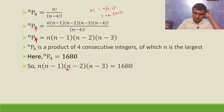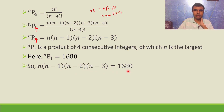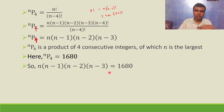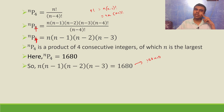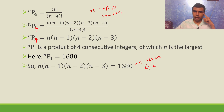So n into n minus 1 into n minus 2 into n minus 3 equals 1680. I have to write 1680 as a product of four consecutive integers. I'll tell you a technique: keep factorizing it. I can write 1680 as 168 into 10, and 168 goes by 8 — so 8 into 21 into 10.